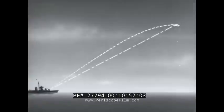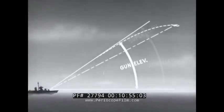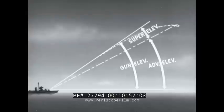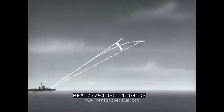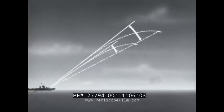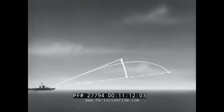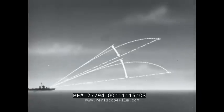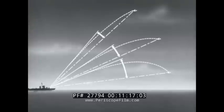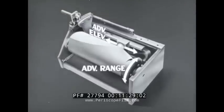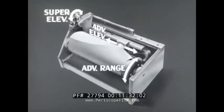Briefly, the problem is this. Gun elevation is the sum of superelevation and advance elevation of the target. Superelevation increases as advance range increases, but not in direct proportion. Superelevation decreases as advance elevation increases. Again, not in direct proportion. Thus, superelevation is determined by advance range and advance elevation, both of which are the inputs to this cam. The output is superelevation.